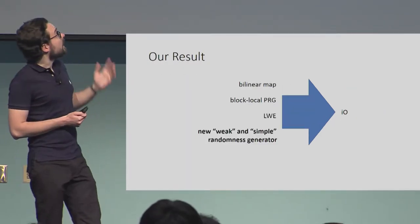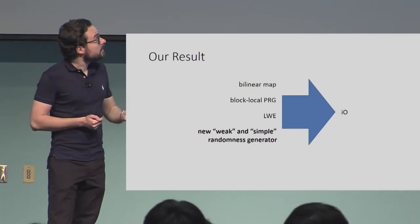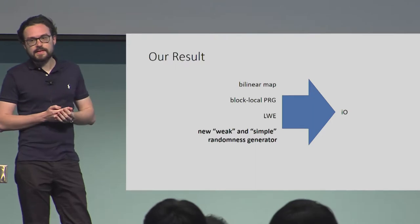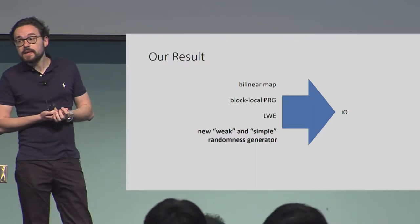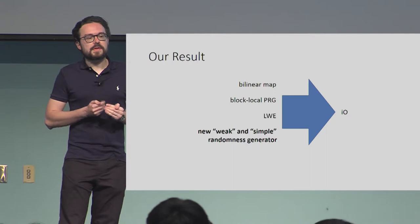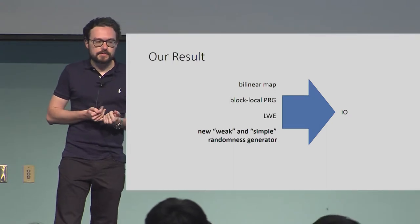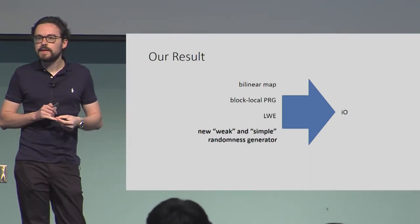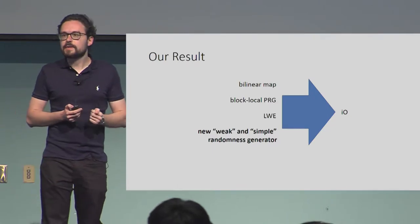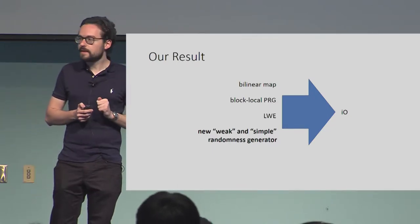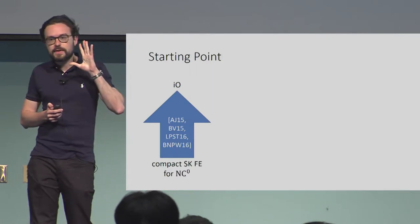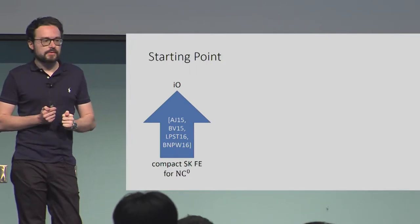These are our results. We essentially do get IO from bilinear maps, and again this uses local PRGs and LWE, but we also have to add some new assumption, which is essentially a new type of randomness generator that has some weak hiding property and a simple structure. We'll discuss this in more detail. But first I want to give you a very brief intuition about how our construction works.